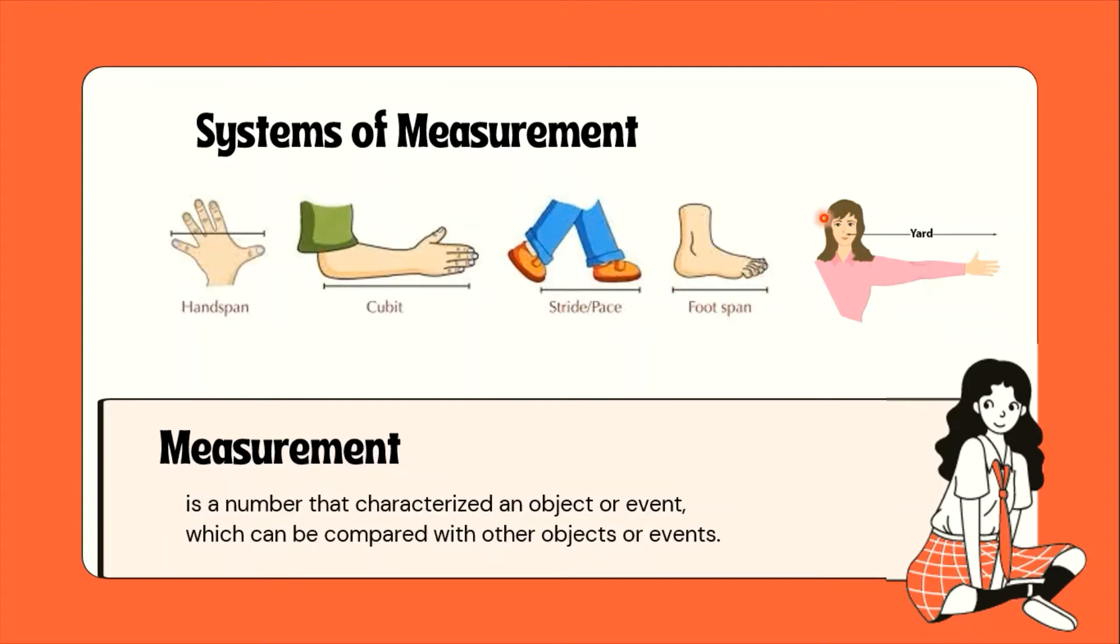Foot span ay yung isang talampakan. Yard ay mula sa center or middle of the body hanggang sa tip of the middle finger. Isang gamit nitong non-standard system of measurement ng yard na ito ay, napapansin ko yung sa palengke, pag buwibili ka ng mga garter.